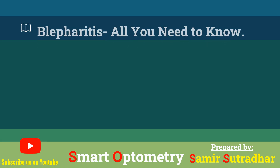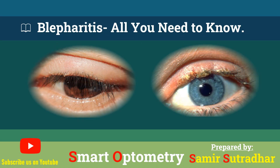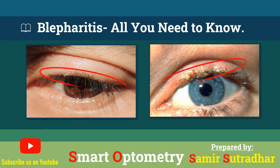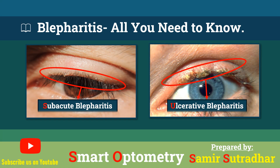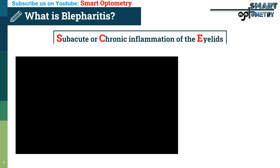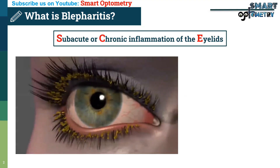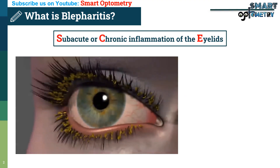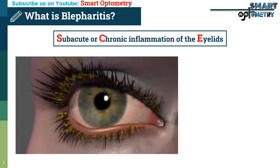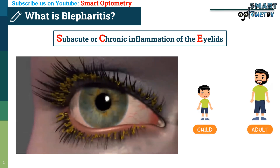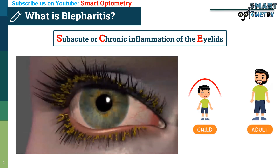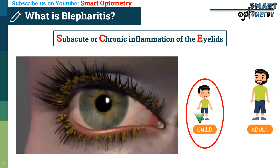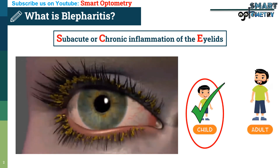Today, we'll discuss blepharitis. What is blepharitis? Blepharitis is a subacute or chronic inflammation of the eyelids. It's extremely common, affecting both eyes and often seen in children.